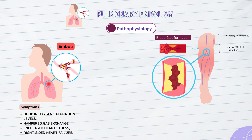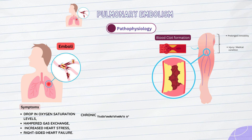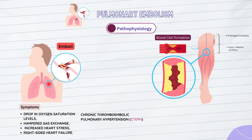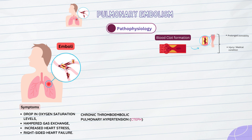Furthermore, if the blood clot does not disintegrate or is not treated quickly, it might become organized, resulting in chronic thromboembolic pulmonary hypertension. CTEPH is characterized by the formation of scar tissue within the afflicted pulmonary arteries, which results in long-term pulmonary hypertension and reduced lung function.